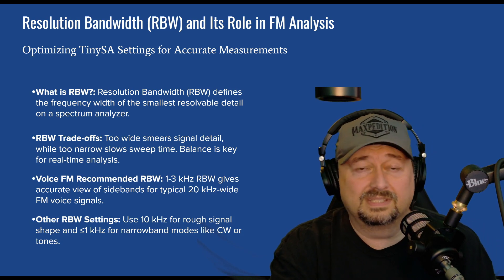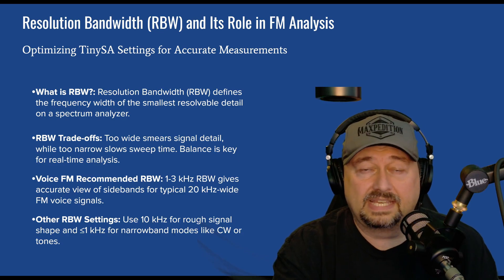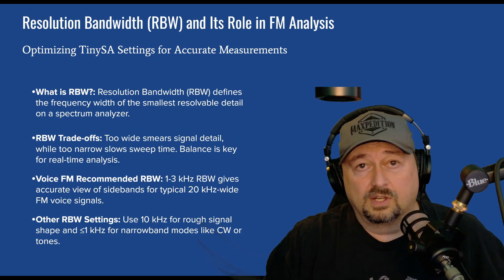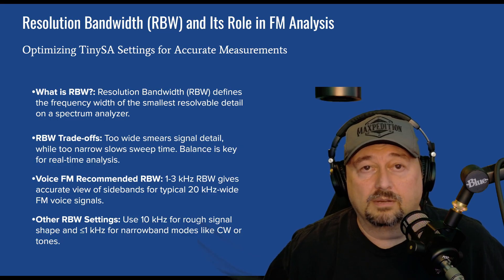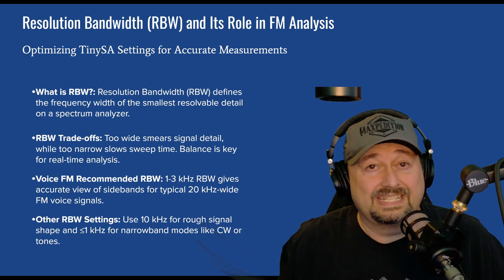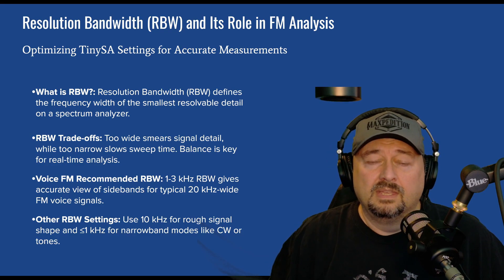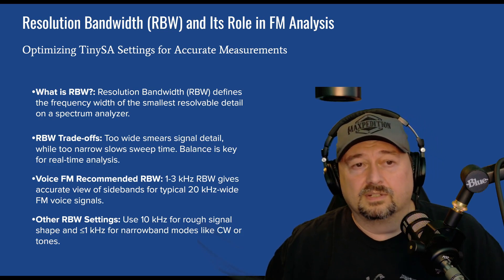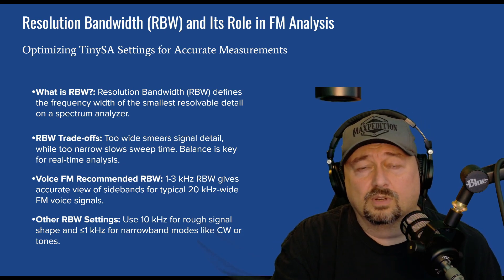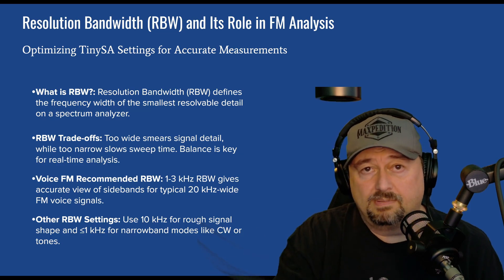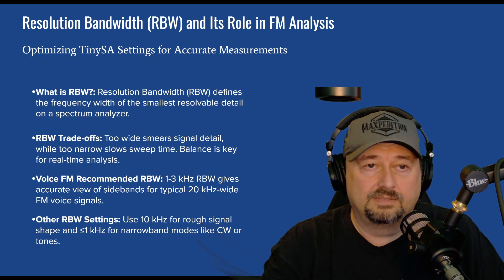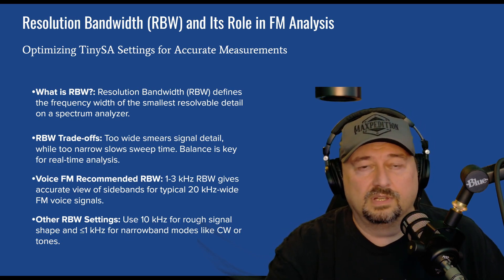For my measurements I'm going to use 1 kilohertz because I can wait the extra half second for the sweep to complete — it's not a big deal. If I was looking at large spectrum slices, like doing a harmonic test, I would use a much larger resolution bandwidth, probably around 300 to 600 kilohertz. But 1 to 3 kilohertz is fine for looking at around 20 kilohertz channels. You can also use about 10 kilohertz for signal shape, but for accurate power measurement within a channel we want something smaller.